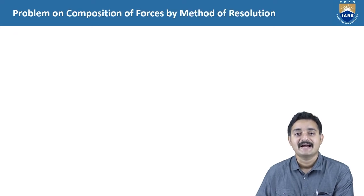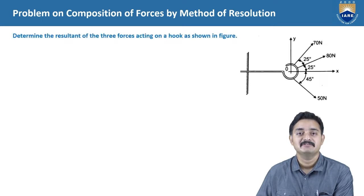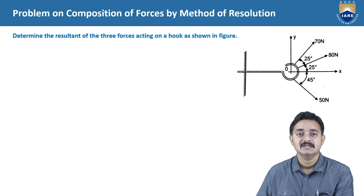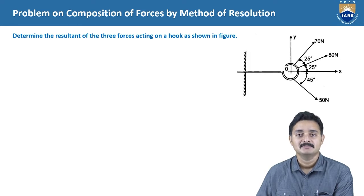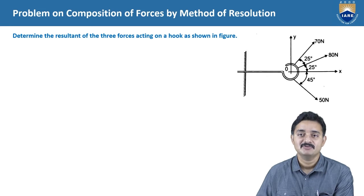Let us do a problem for identifying the resultant by using composition of forces by the method of resolution procedure. The problem given is: determine the resultant of three forces acting on a hook as shown in the figure. In the problem, there are three forces acting on the hook, so first let us resolve these forces into component forces, because all three forces — 70 N, 80 N, and 50 N — are inclined forces to the horizontal.